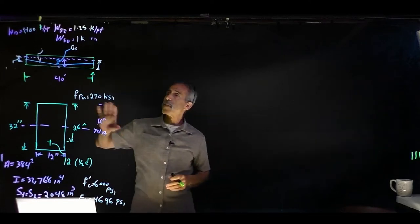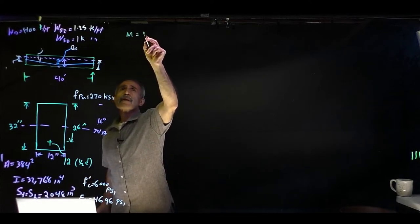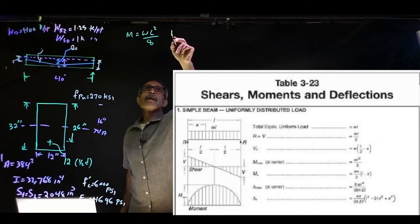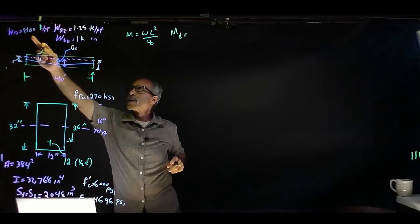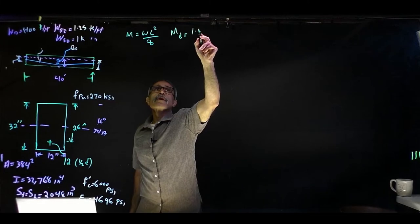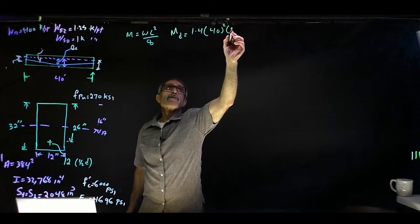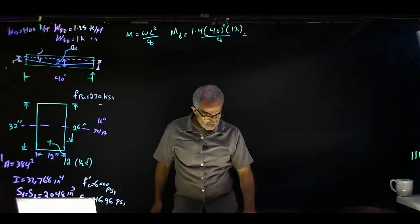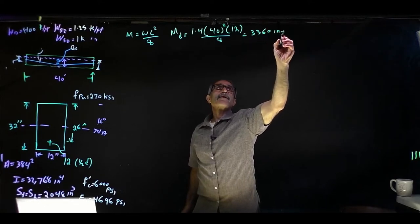The first thing I want to do is calculate the dead load moment at midspan. The formula is M = wL²/8. So the dead load moment equals the combined load of 1.4 kips per foot (beam weight plus superimposed dead load), times 40 feet squared, converted to inches, divided by 8. That comes out to 3,360 inch-kips. So MD = 3,360 inch-kips.